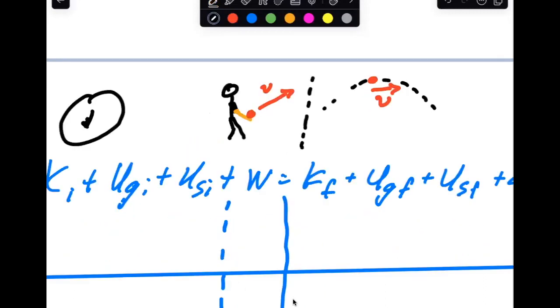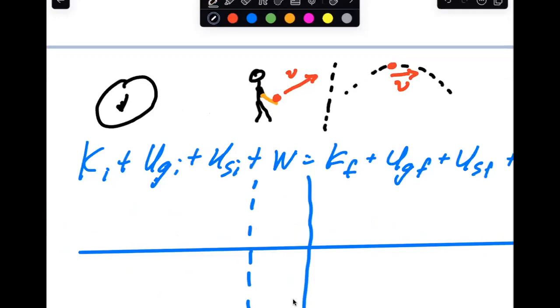Initially it has a lot of kinetic energy, moving really fast. At its highest point, it is still moving because it's hit at an angle.